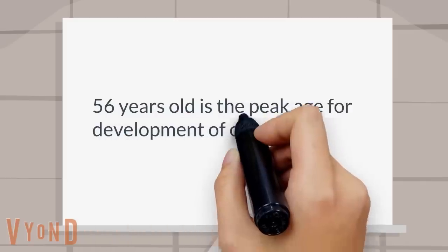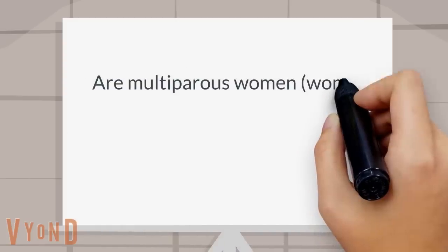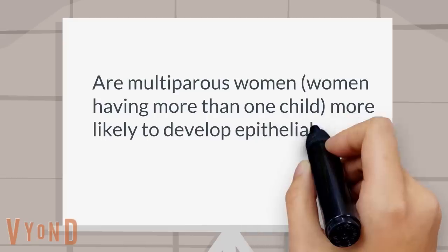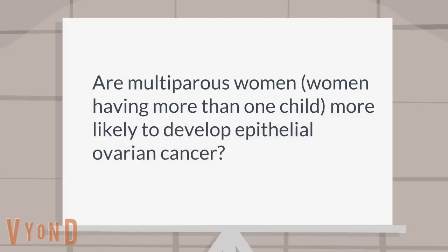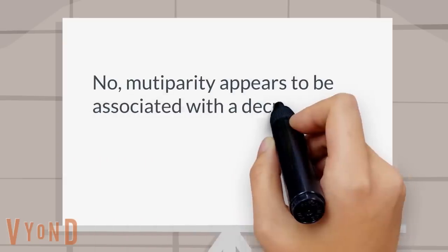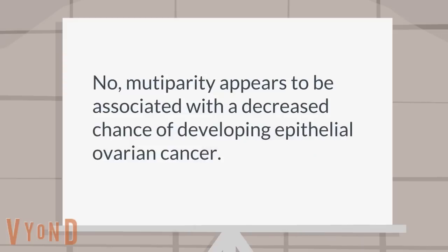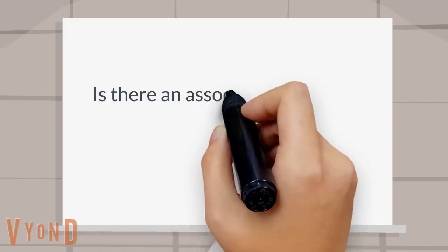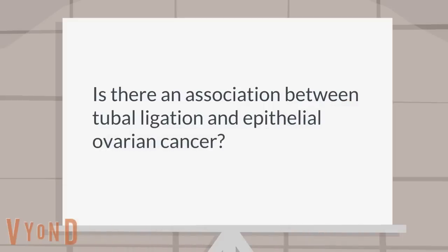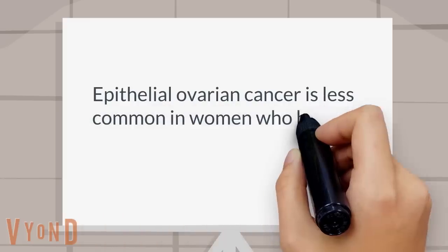What is the peak age for development of ovarian cancer? 56 years old is the peak age for development of ovarian cancer. Are multiparous women — women having more than one child — more likely to develop epithelial ovarian cancer? No, multiparity appears to be associated with a decreased chance of developing epithelial ovarian cancer.